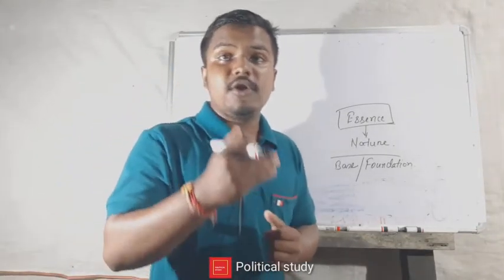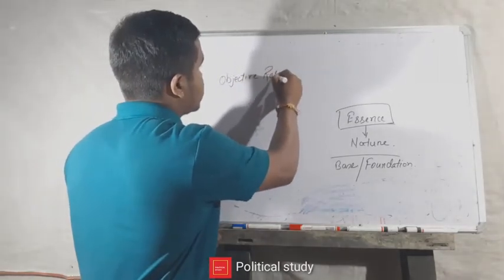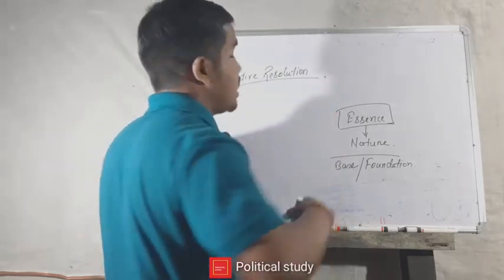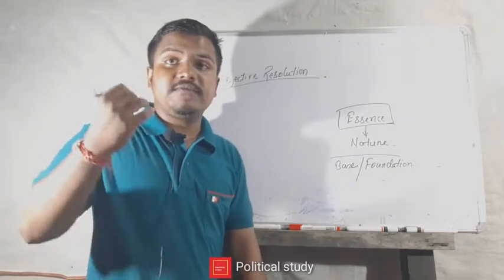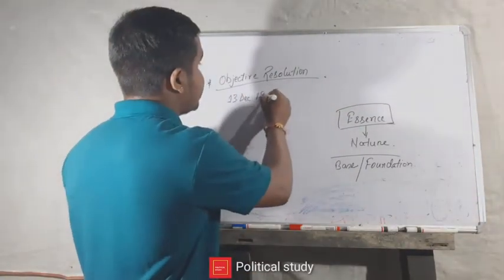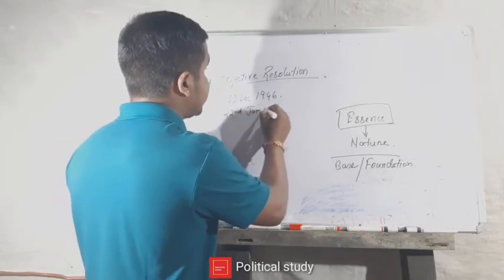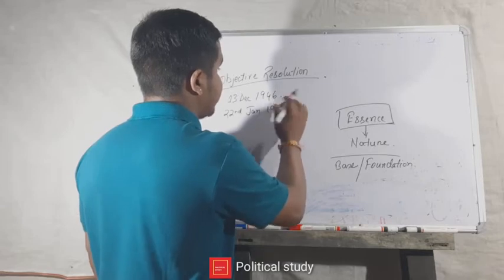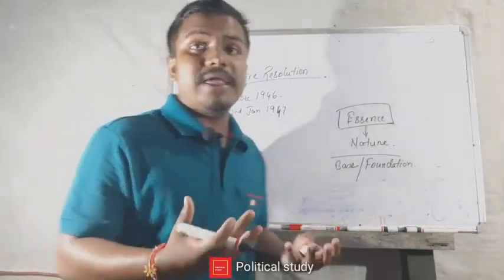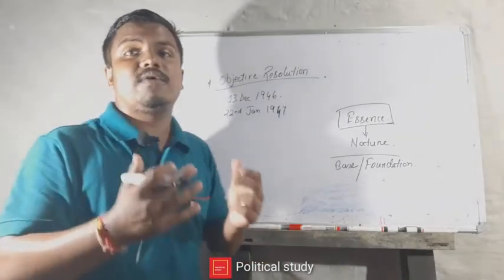The preamble of our Indian constitution is based on the Objective Resolution. The Objective Resolution was drafted by Pandit Jawaharlal Nehru on 13 December 1946, and it was accepted by the Constituent Assembly on 22nd January 1947. The term preamble of our Indian constitution is based on this Objective Resolution, and this Objective Resolution is known as the preamble of our Indian constitution.